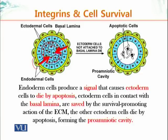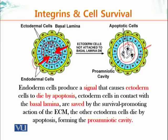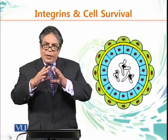The red arrow shows the signal being released by the endodermal cells. As a result of these signals, the ectodermal cells that are not attached to the ECM — the yellow ring represents the ECM — they die. However, the blue ectodermal cells that are attached to the ECM can withstand the signal and do not die, because their attachment to the ECM negates the apoptotic signal originating from the endodermal cells. The attachment signal is greater than the death signal, so those attached cells survive.